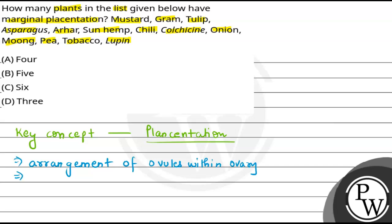And if we talk about types, then there are many types like marginal, axile, parietal, free central, and basal. But here we will talk about marginal placentation.